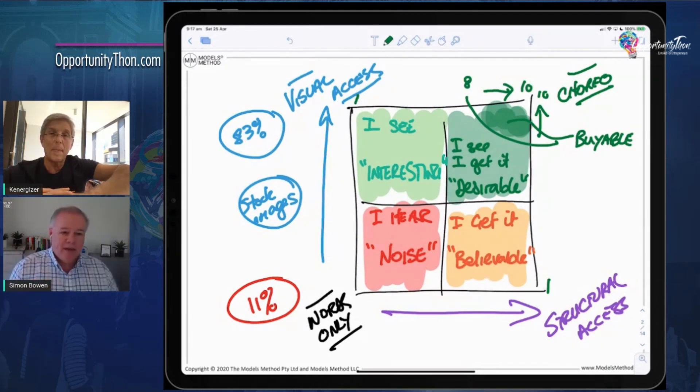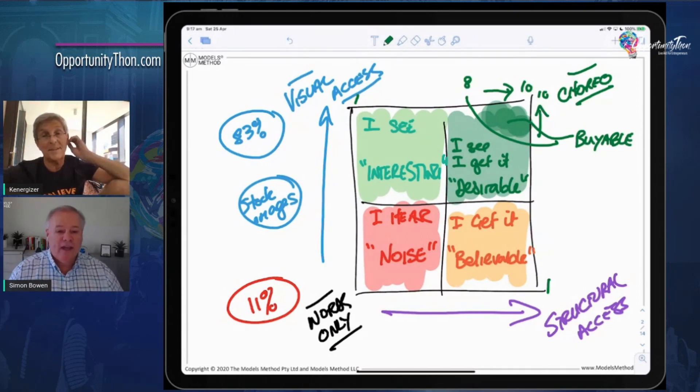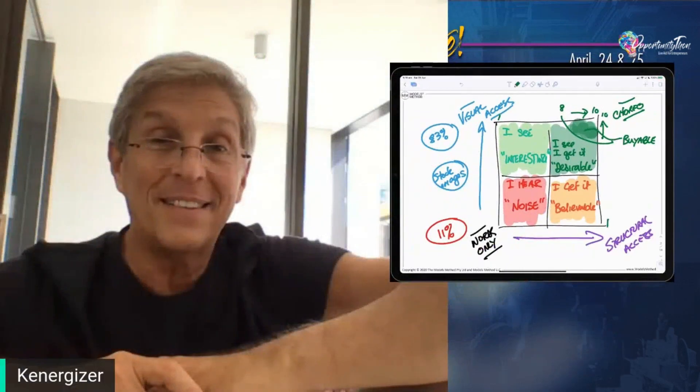And the easiest way for people to understand this is just think about how long it would have taken to explain what I just did in words only. It would be impossible. I would have lost you at 'noise.' But part of my agenda was to turn communication into art. And if you can turn communication into art, people will engage with you.